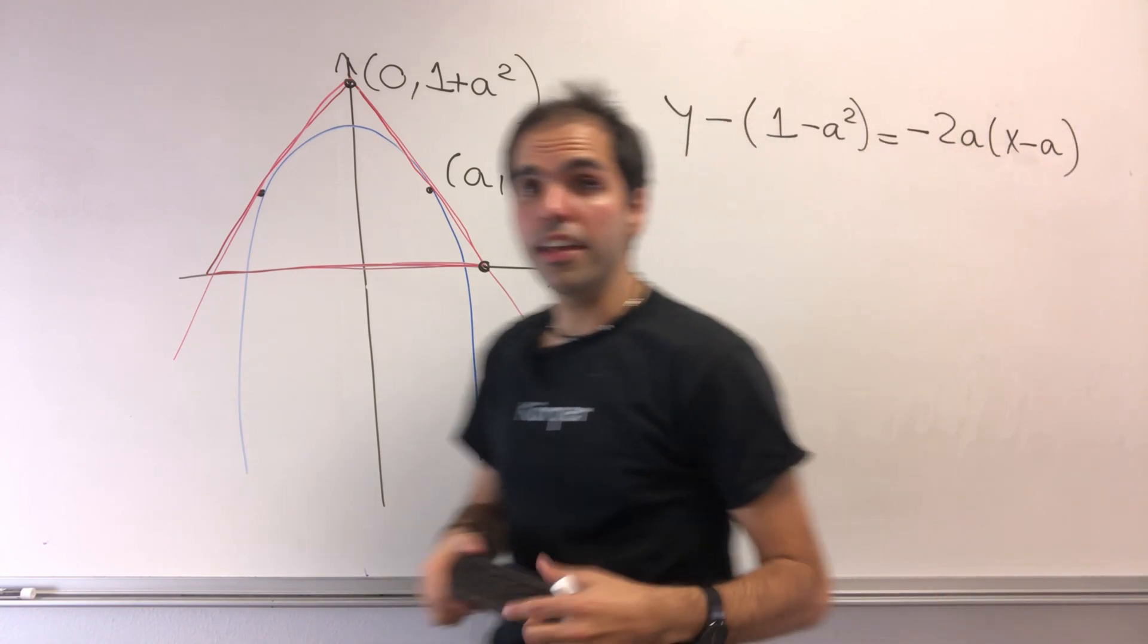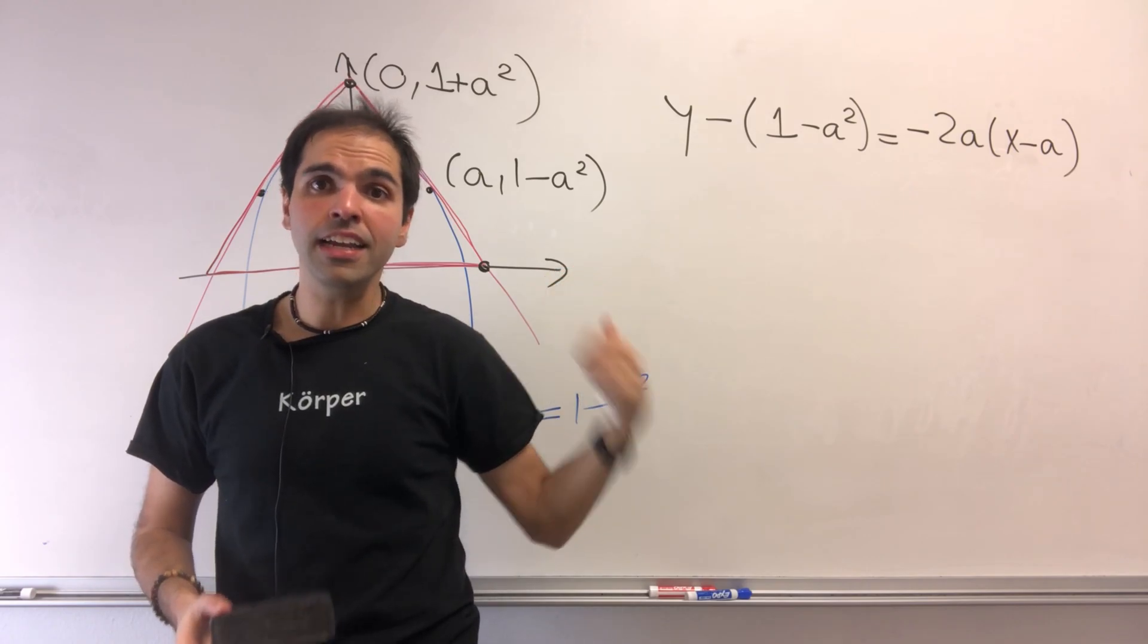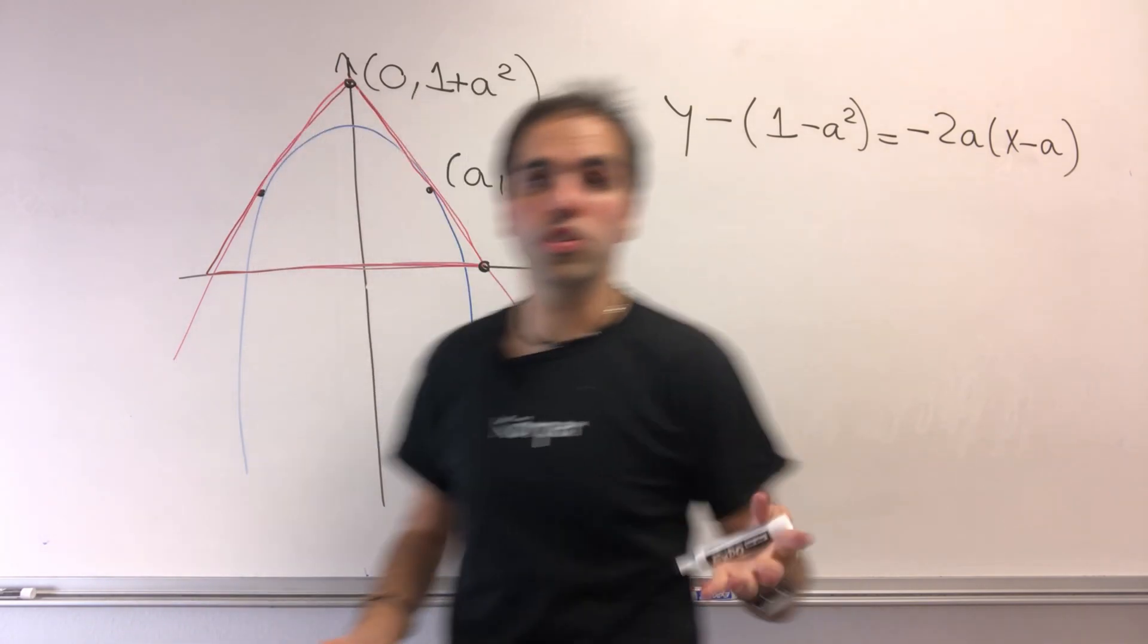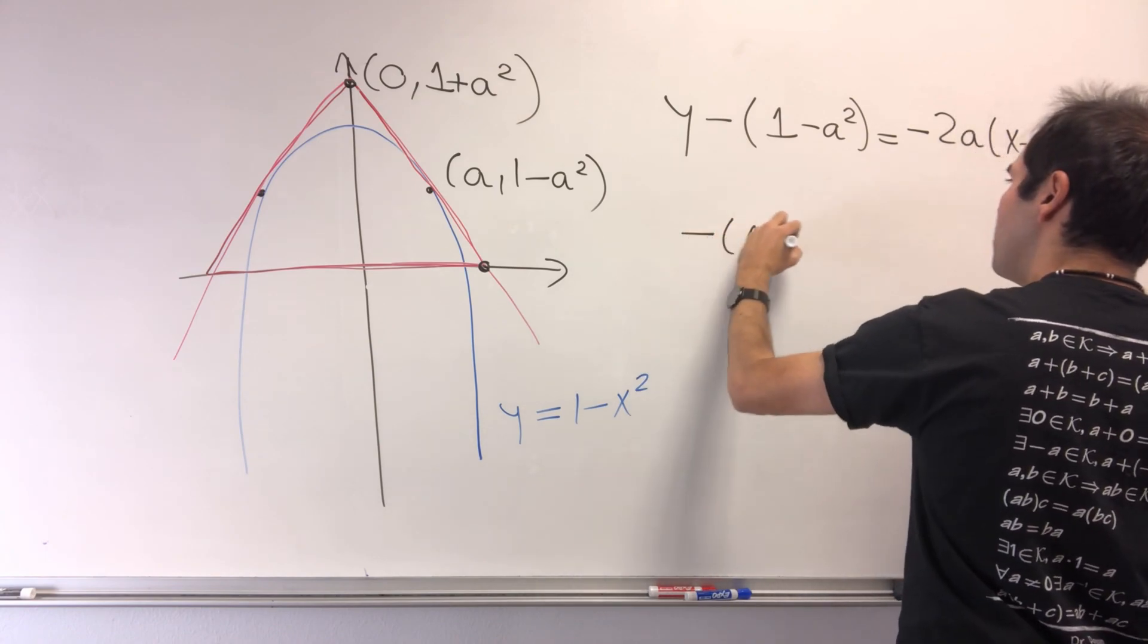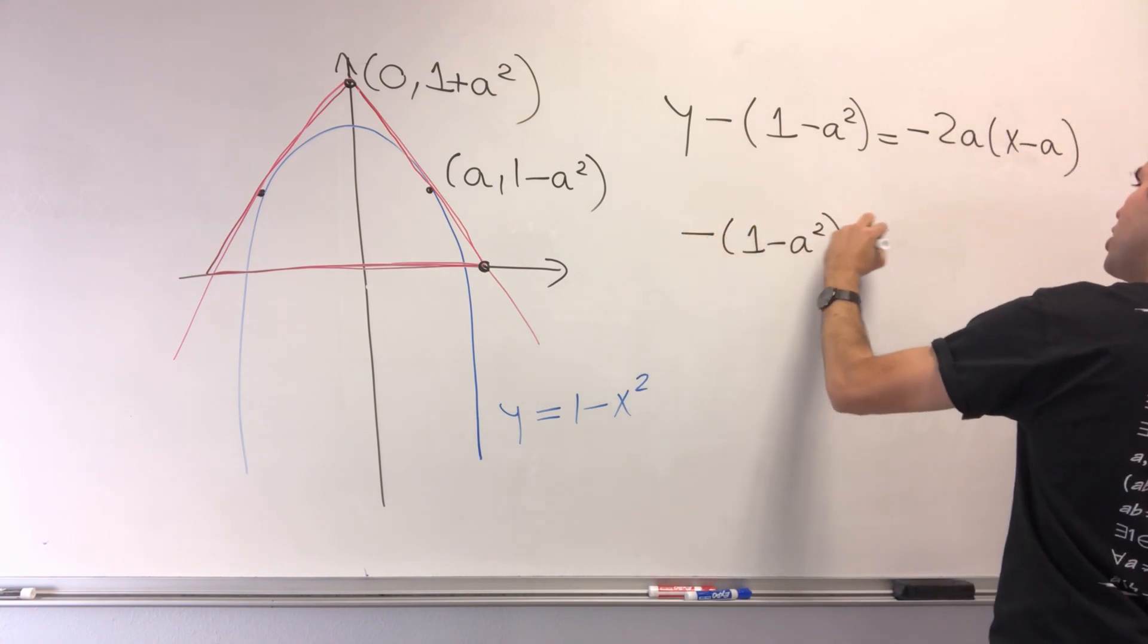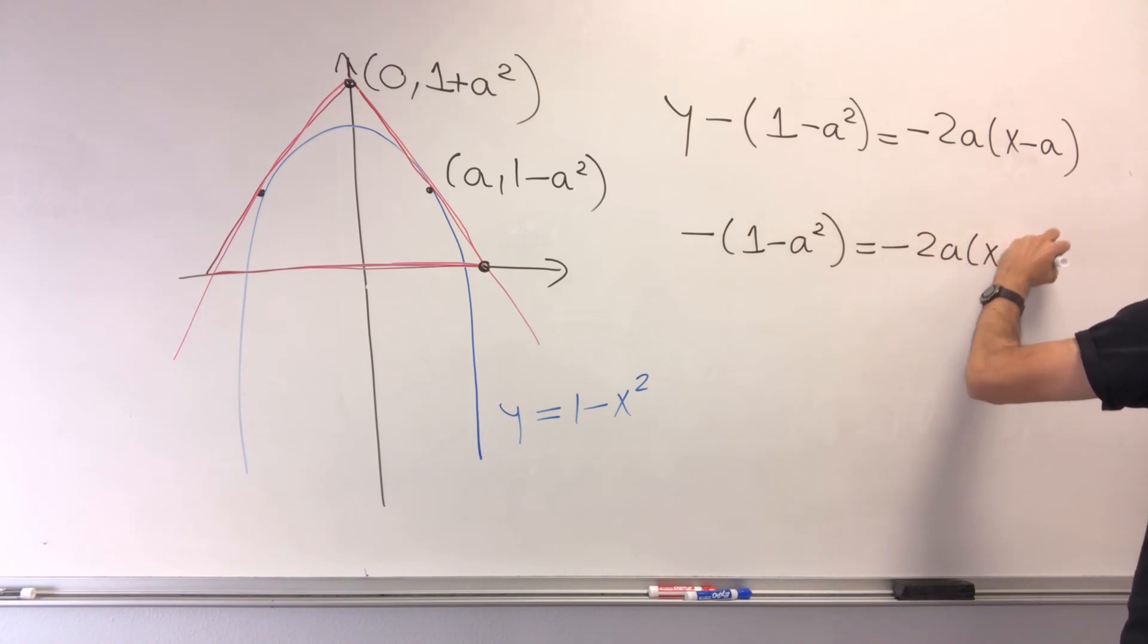All right. But it's the same thing. You have that tangent line, and then this time you just want to set y equals 0.